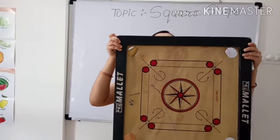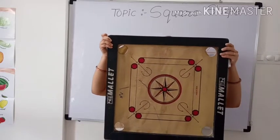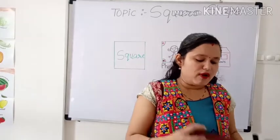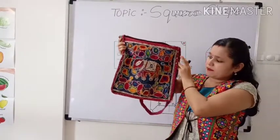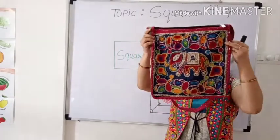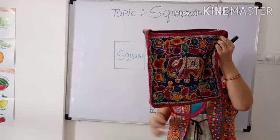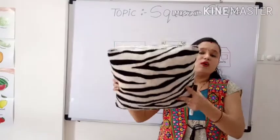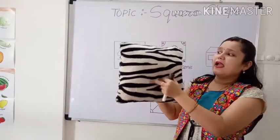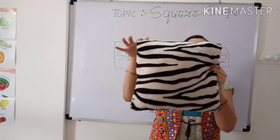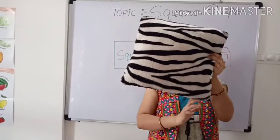This book is also in square shape. Look here. What is this? Carom ball. This is a carom ball, and it is also in square shape. Do you know what is this? This is a purse. What is this? Purse. And it is also in square shape. And it has four equal sides and four corners. How many corners? Four.